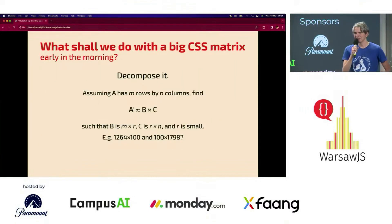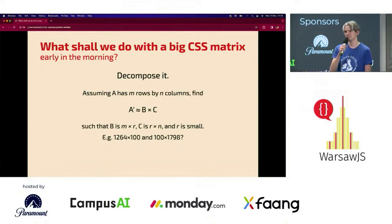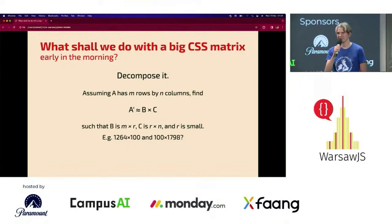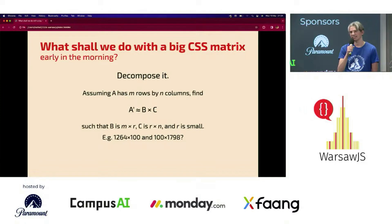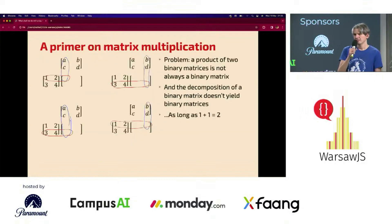Once we have a binary matrix, what can we do with it? Decompose it. Linear algebra gives us tools to represent a matrix as a product of two matrices that, taken together, are smaller than the input matrix, because the r dimension can be as small as you want. And when you take the product of these matrices, you get back a matrix that is similar to the input one, in the sense of the difference having a small Frobenius norm.